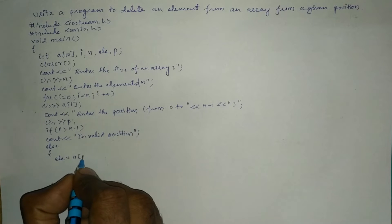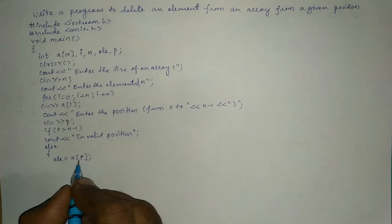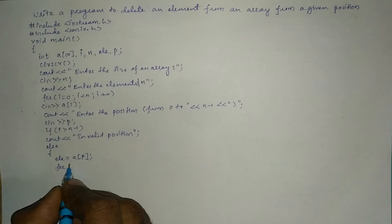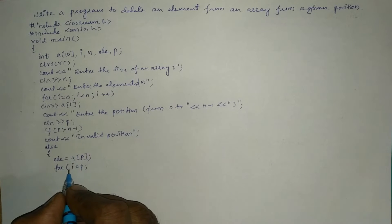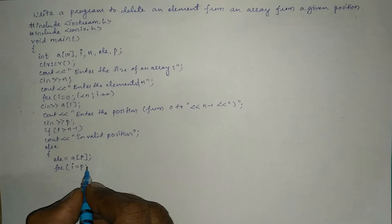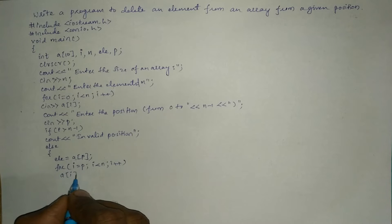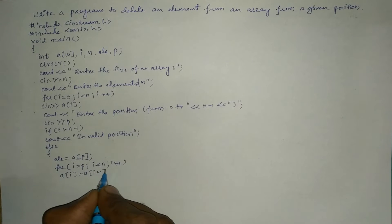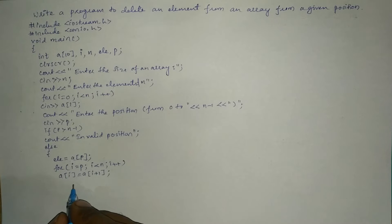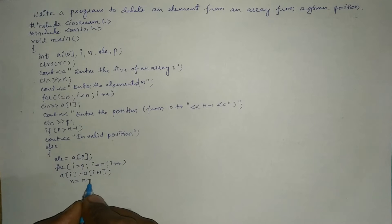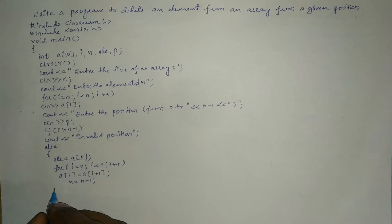In the else block, element is assigned a[position], which stores the value to be deleted. Then a for loop starts from i = position; i < n; i++, and inside we write a[i] = a[i+1], so higher-order elements are shifted to lower-order positions. After the loop, n = n - 1 to reduce the array size by one.